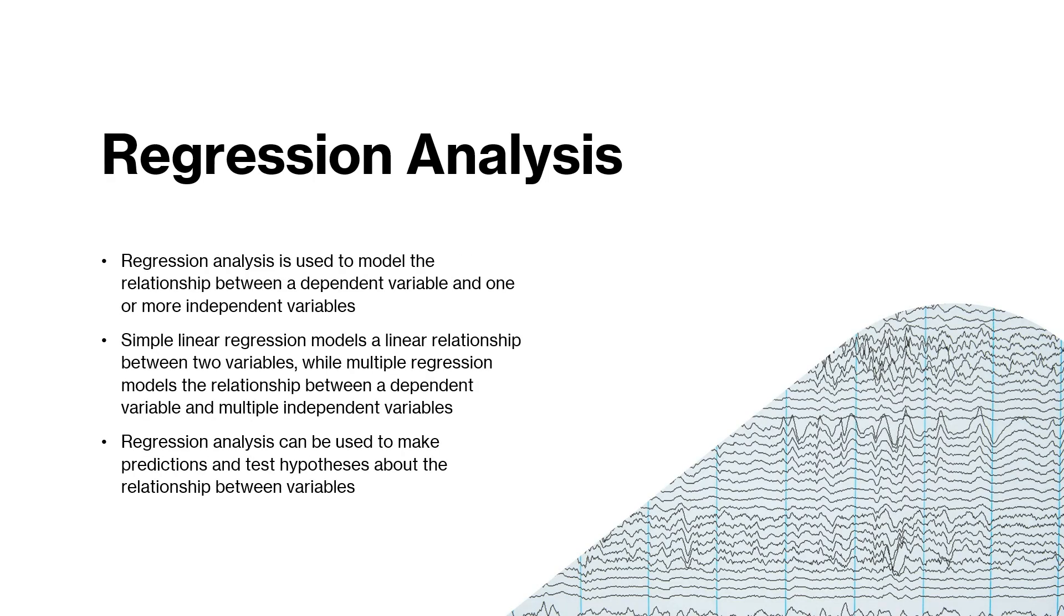Regression analysis is used to model the relationship between a dependent variable and one or more independent variables. Simple linear regression models a linear relationship between two variables, while multiple regression models the relationship between a dependent variable and multiple independent variables. Regression analysis can be used to make predictions and test hypotheses about the relationship between variables.